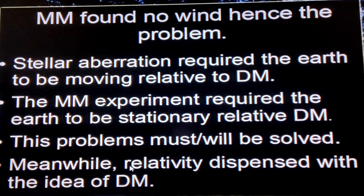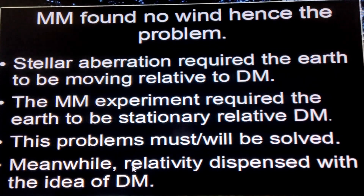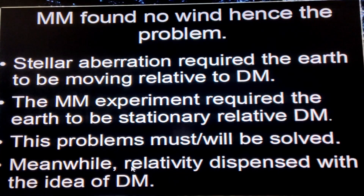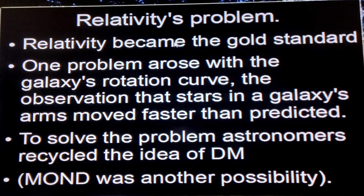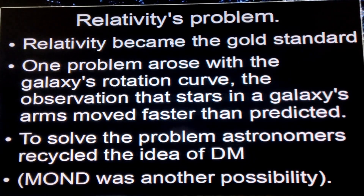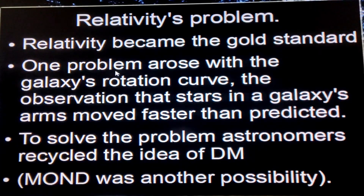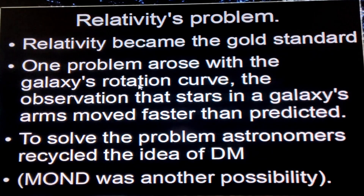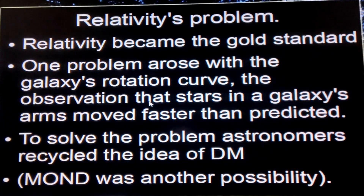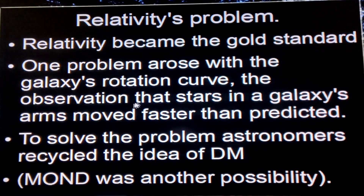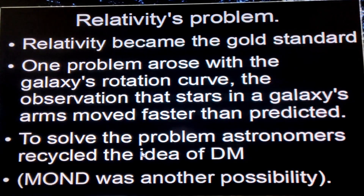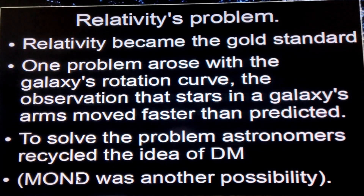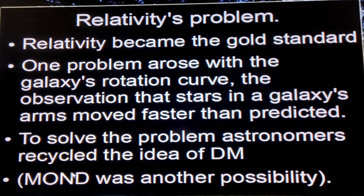At the time, a new idea came up called relativity, and relativity said let's get rid of dark matter altogether — it doesn't exist. Relativity became the gold standard because it explained almost everything. However, one problem it couldn't solve was the galaxy rotation curve — the observation that stars in the galaxy arms are moving faster than expected. To solve this, astronomers recycled the idea of dark matter. The other possibility is MOND — Modified Newtonian Dynamics — but that's just a mathematical approach trying to fit numbers to observations with no physical reason behind it.